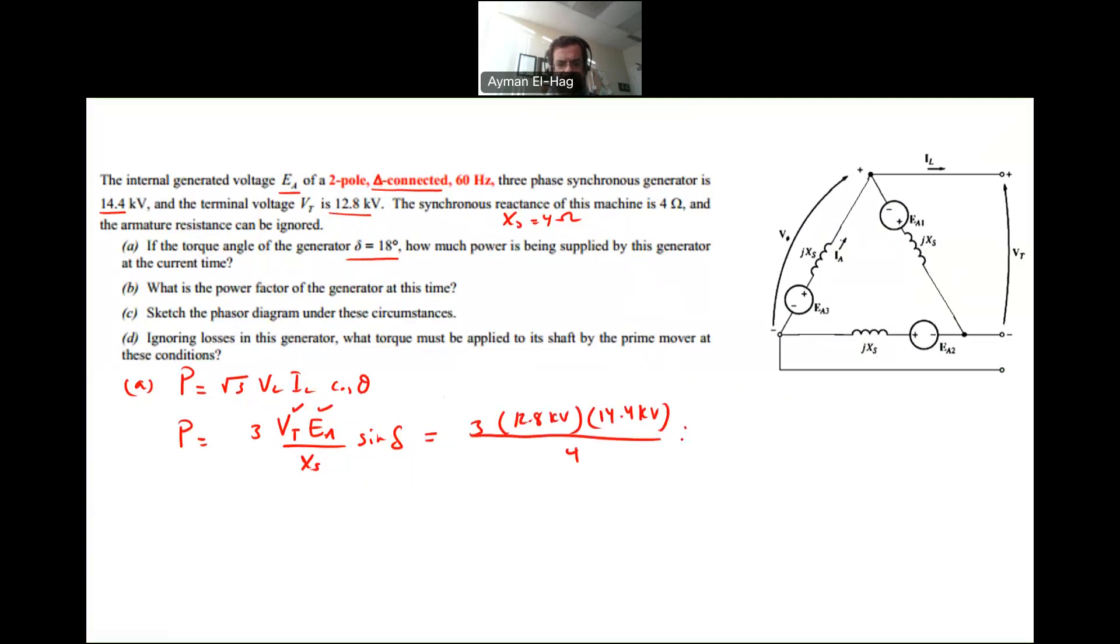sine the angle between the two, which is 18. And this will give me a total power equal to 42.7 megawatt. So this is part A.